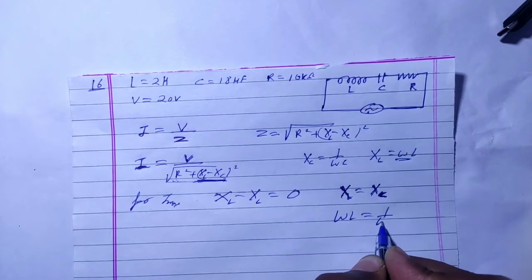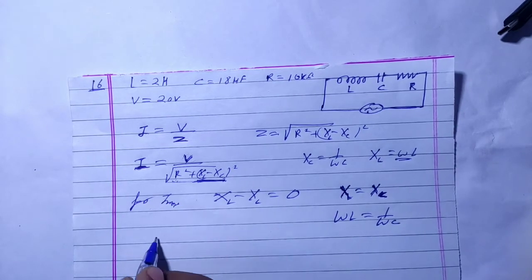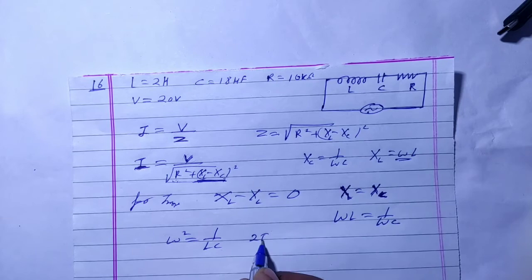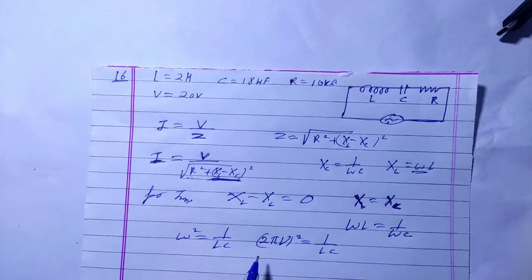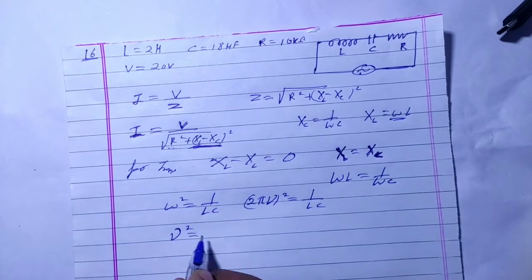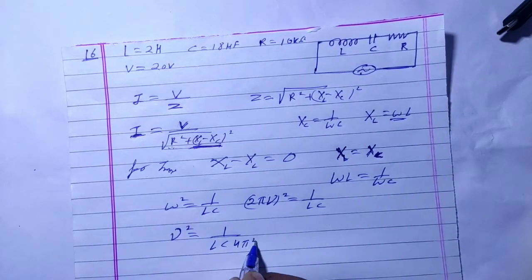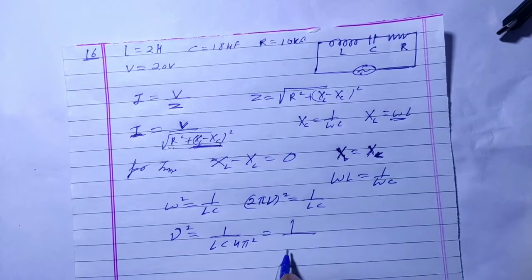At resonance, XL equals XC, so omega squared equals 1 by LC. That means (2π×ν)² equals 1 by LC. So ν squared equals 1 divided by (LC × 4π²).